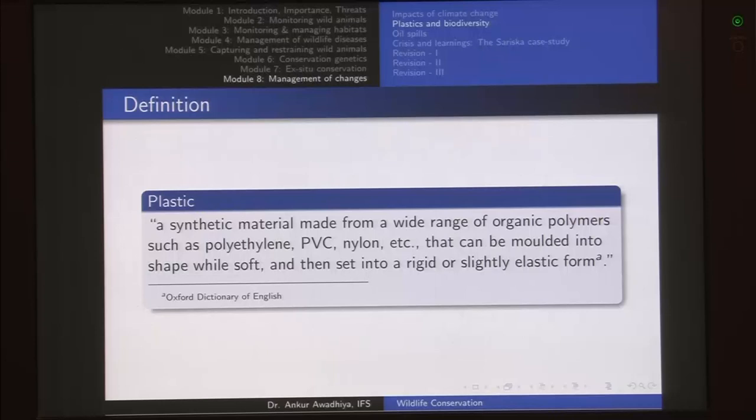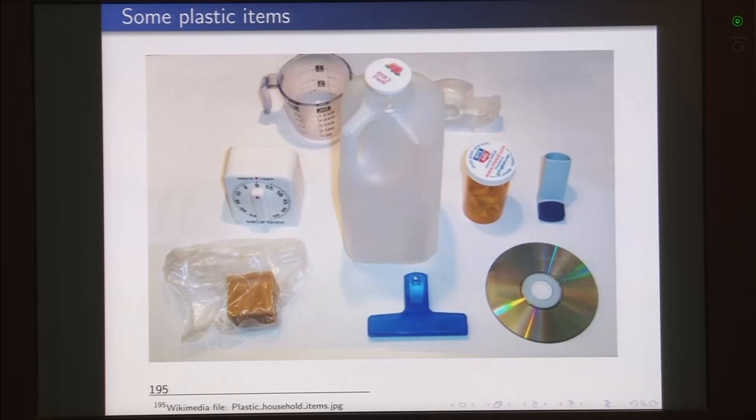What is a plastic? A plastic is defined as a synthetic material made from a wide range of organic polymers such as polyethylene, PVC which stands for polyvinyl chloride, nylon, etc., that can be molded into shape while soft and then set into a rigid or slightly elastic form. We can understand plastics by looking all around us — most of the items that we use these days are plastic materials.